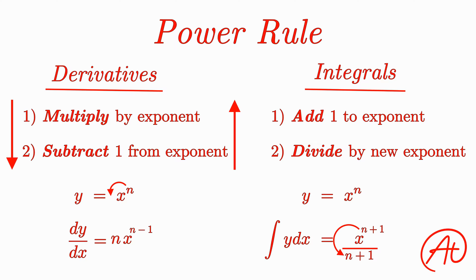But since this is an indefinite integral, we need to add plus some unknown constant C to account for the possibility of there being a constant in the original function.